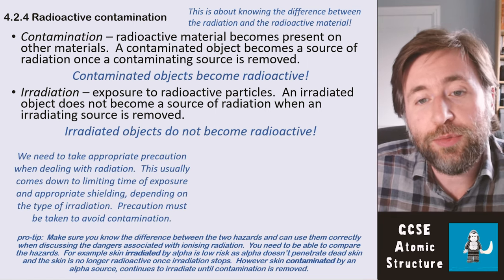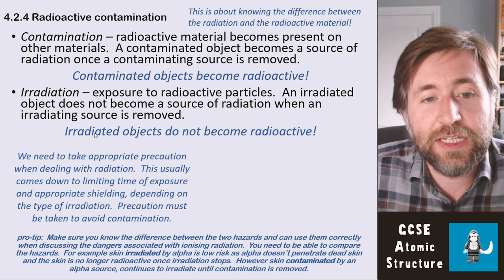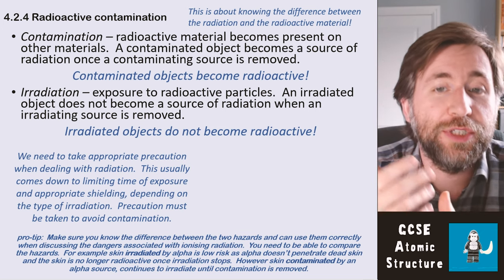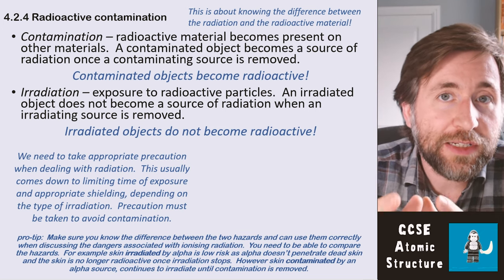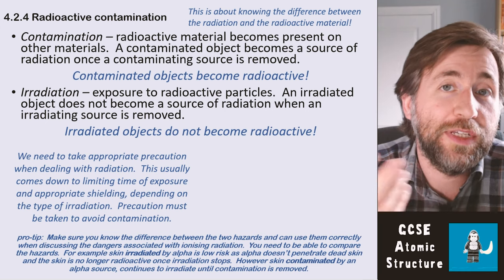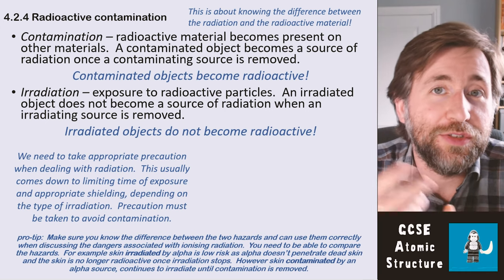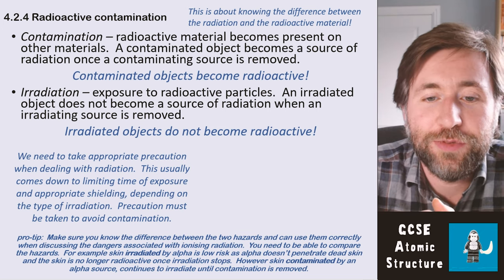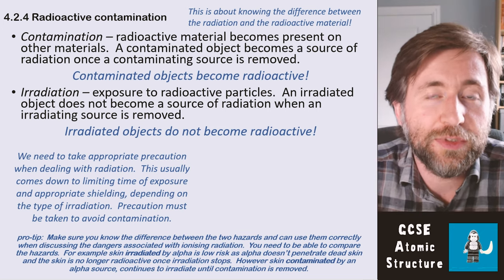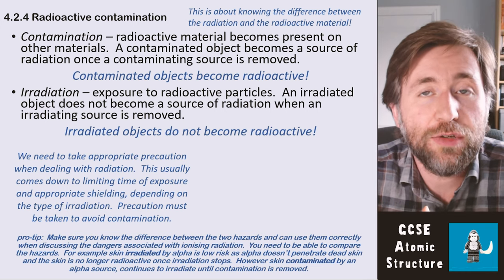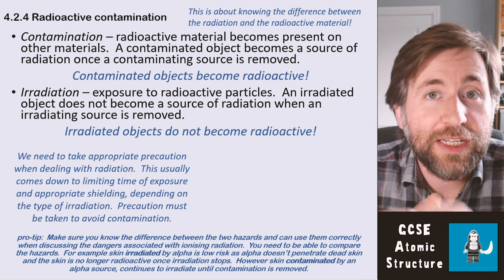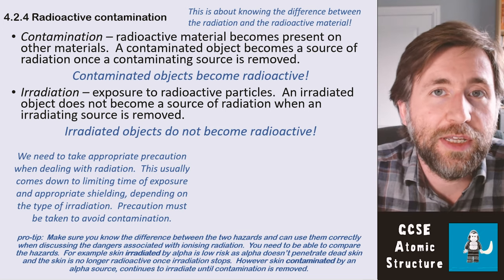So we need to take appropriate precautions when we deal with radiations. This comes down to limiting the time of exposure and using appropriate shielding. Depending on the type of radiation, we choose a different way of shielding, and depending on the intensity, we decide how long to limit exposure. We must use precautions to avoid contamination, so we often wear protective clothing that can then be removed so it doesn't contaminate other things we'll spend time near.